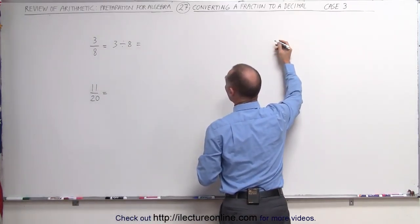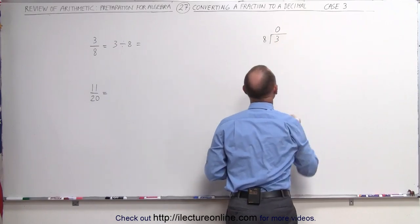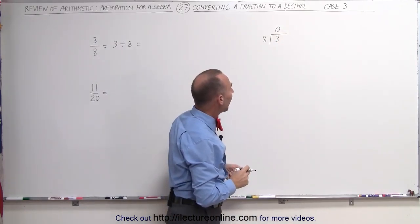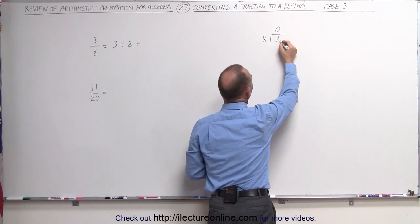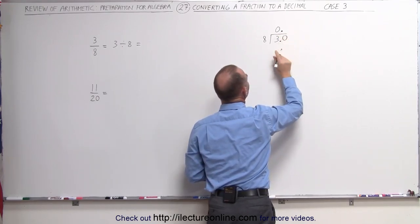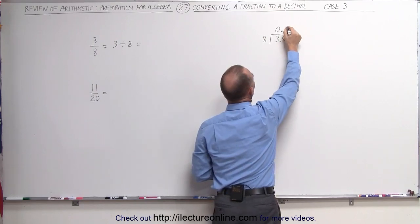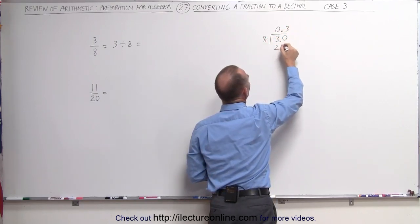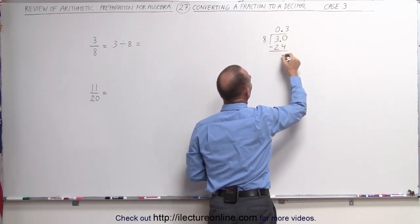Let's take the number 3 and divide it by 8. Well, 8 goes into 3 zero times. No remainder, and then we realize there's a decimal place here. That means we're going to put a decimal place there. Now we add a zero. 8 goes into 30, 3 times. 3 times 8 is 24. When we subtract that from 30, we get 6.